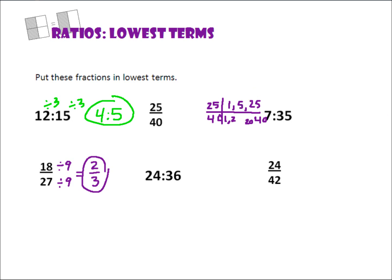5 is going to be the greatest common factor. So that means I'm going to divide by 5 here, and I'm going to divide by 5 here. 25 divided by 5 is 5, and 40 divided by 5 is 8.